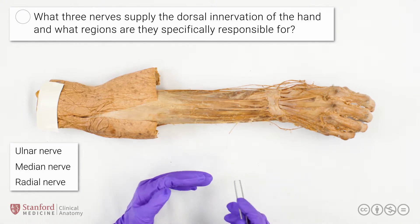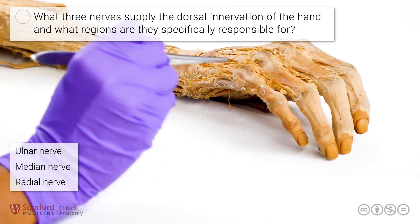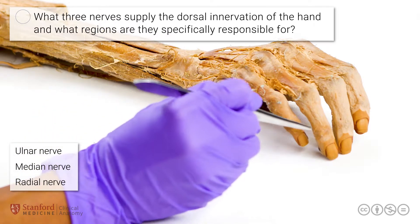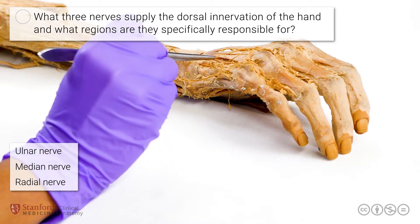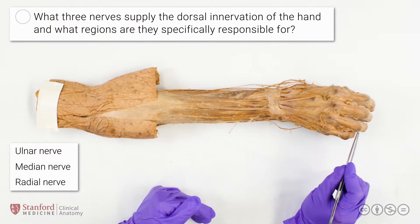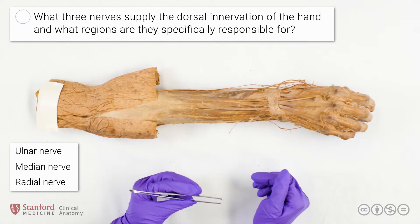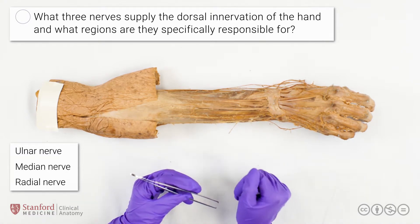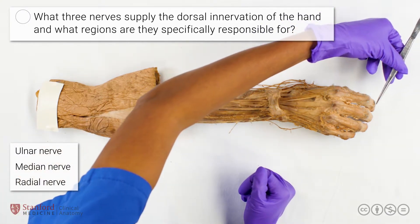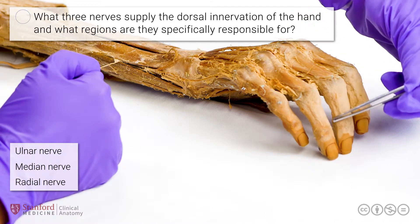The ulnar nerve specifically is responsible for the little finger and the area more proximally on the hand, and the ulnar half of the ring finger and the area more proximally on the hand. If we were to draw a line from here to here, the median nerve is responsible for the areas more distal to this line — so the distal fingertips of the index finger, middle finger, and the radial half of the ring finger.